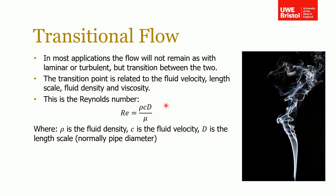We have a number that describes this transition from laminar to turbulent flow — the Reynolds number, which we encountered when looking at dimensional analysis using the Buckingham Pi theorem. It is the density of the fluid times the velocity of the fluid times the length scale — typically the pipe diameter — all divided by the viscosity. We can use this number to describe the type of flow: as Reynolds number increases, you go from laminar flow through critical or transitional flow into turbulent flow.